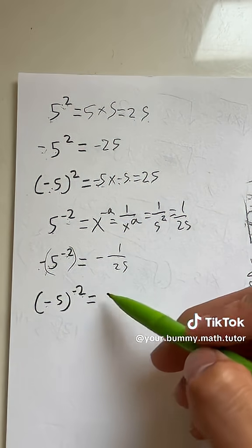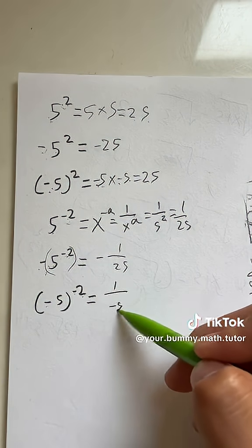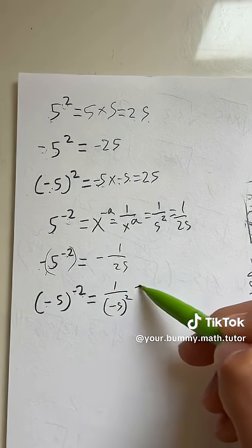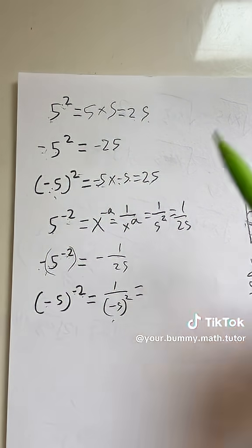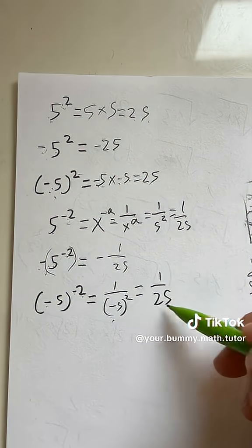negative 5 to the negative second is the same as 1 over negative 5 parentheses to the second power. And as we know from this one, negative 5 parentheses to the second power is equal to 25. Therefore, this is equal to 1 over 25.